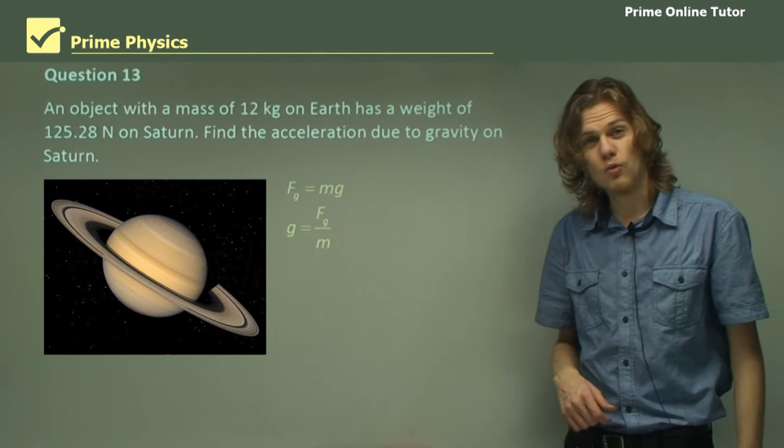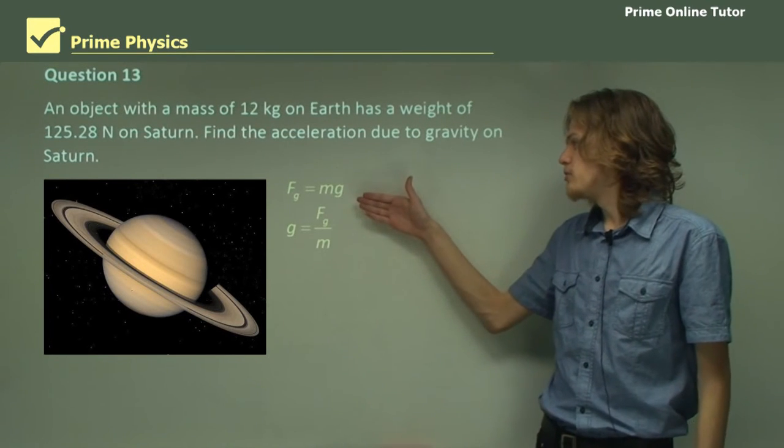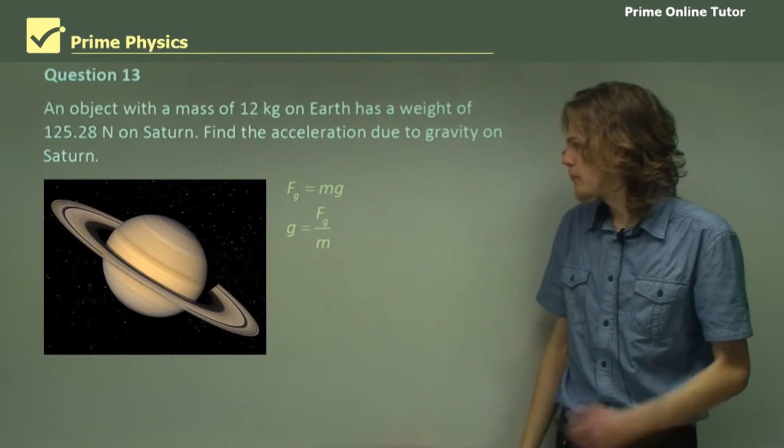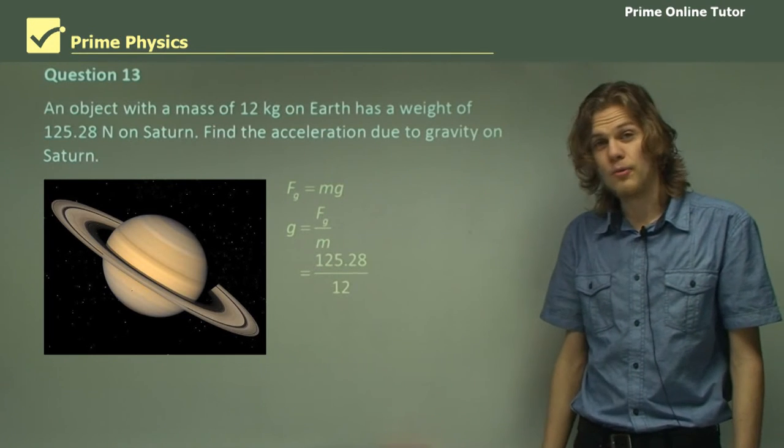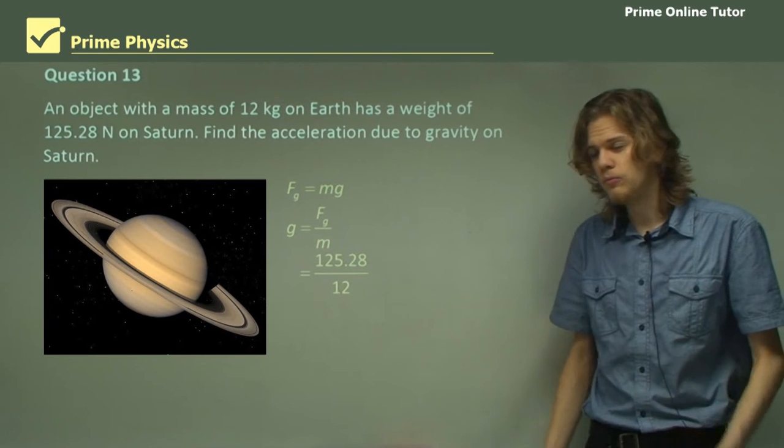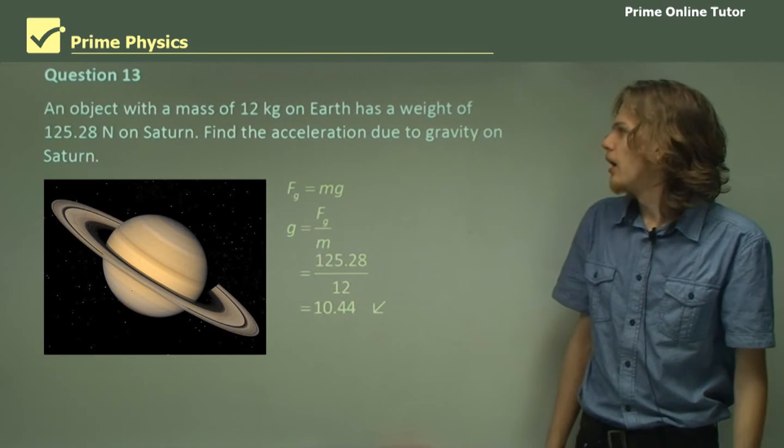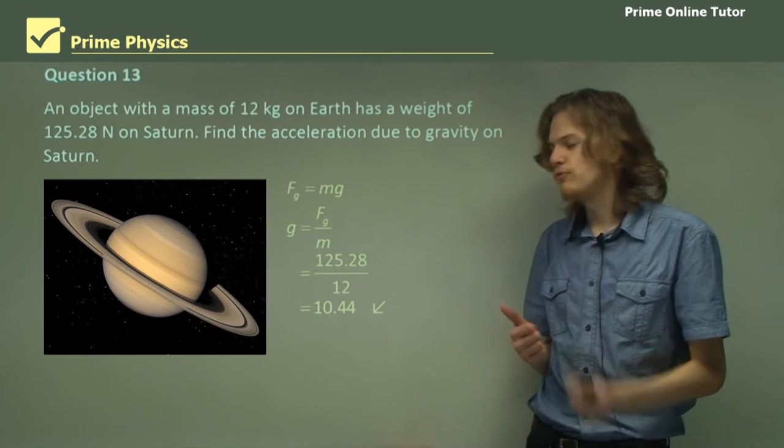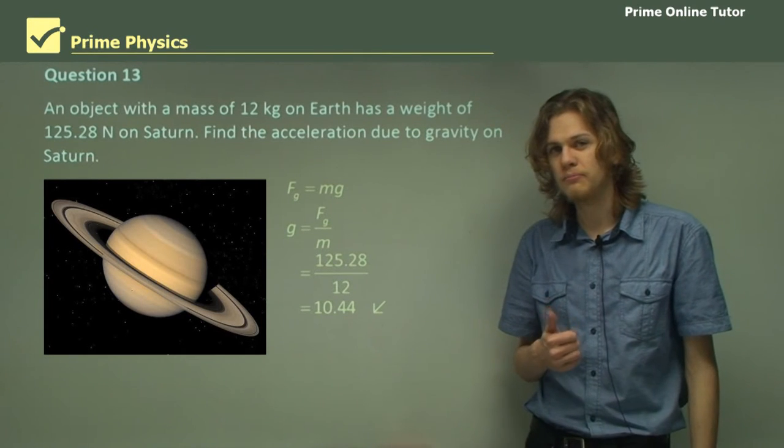So we can rearrange our equation. Now we can substitute the force due to gravity on Saturn and the mass of the object itself. So now our equation looks something like this. And substituting in those values on a calculator, we can find that the acceleration due to gravity is 10.44 meters per second squared. Don't forget units.